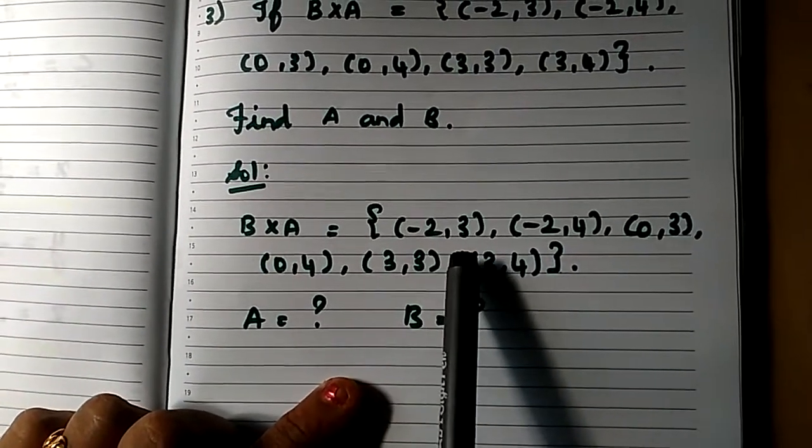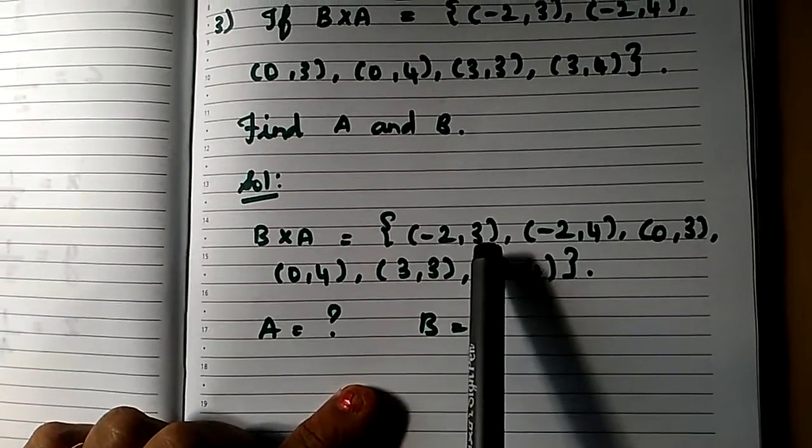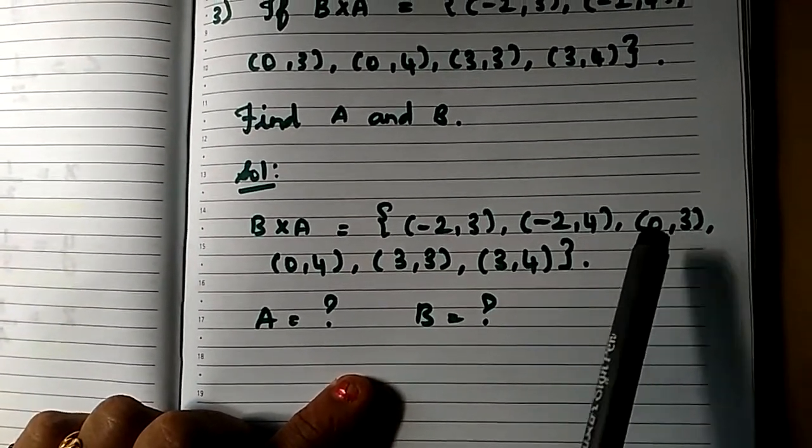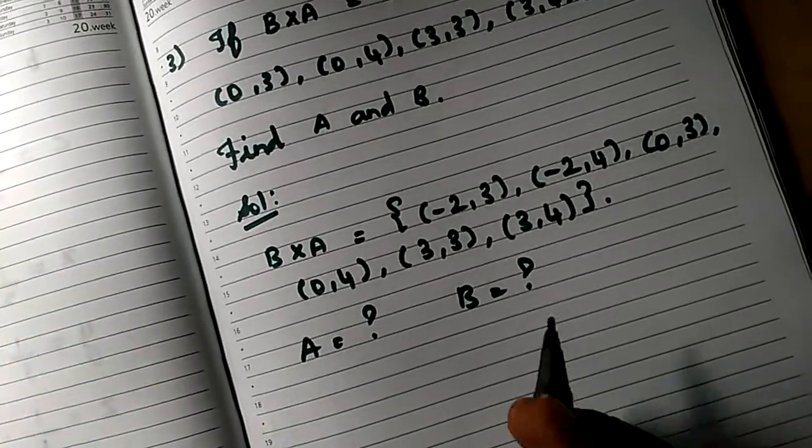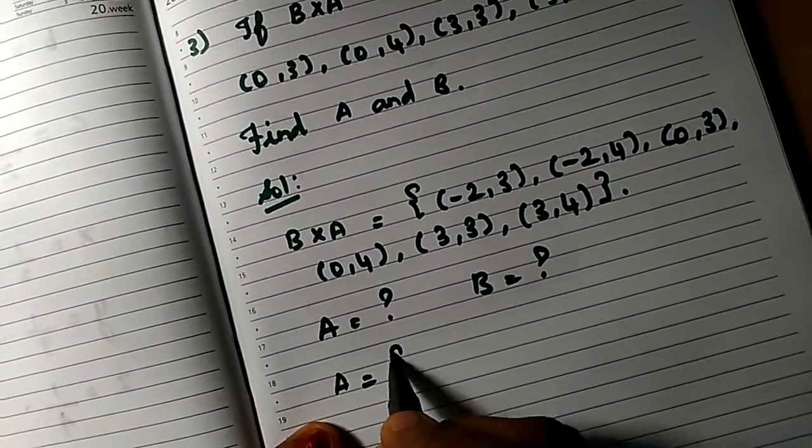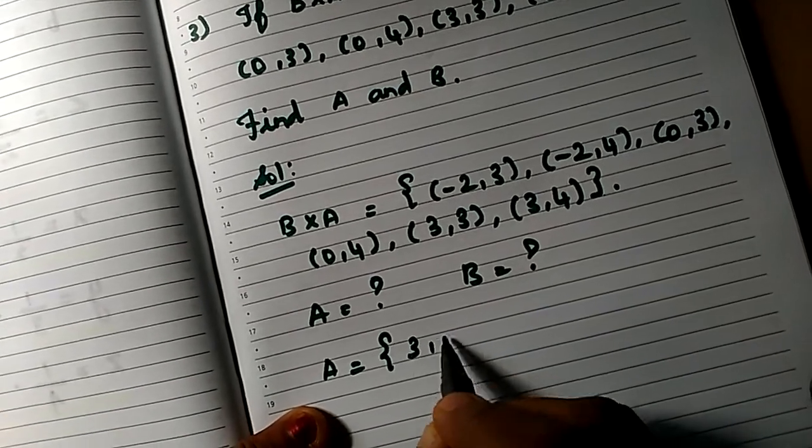First, the second element we will check. What are the second elements? 3,4, next to 3 and 4, next to 3 and 4. So you can see that set A's elements will be only 3,4.